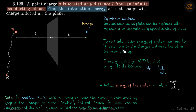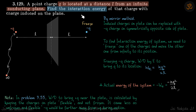To find the interaction energy of the system, we need to freeze one of the charges and move the other one from infinity to that location. Interaction energy has nothing to do with how the charges got there — it only depends on where the charges are present right now. Then you do a one-on-one calculation with the charges and find the interaction energy of the system.